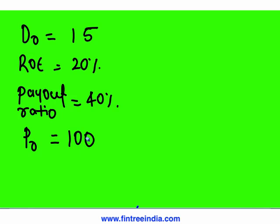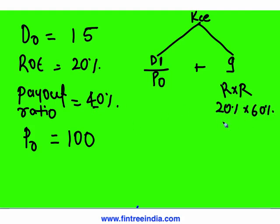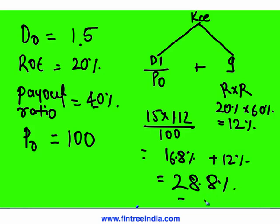If payout ratio is 40 percent, retention ratio is 60 percent. Cost of common equity equals D1 divided by P0 plus g. First calculate g: ROE times retention ratio equals 20 percent times 60 percent equals 12 percent. D1 equals D0 times (1 plus g): 15 times 1.12 equals 16.8. So cost of equity equals 16.8 divided by 100 plus 12 percent, giving 28.8 percent.